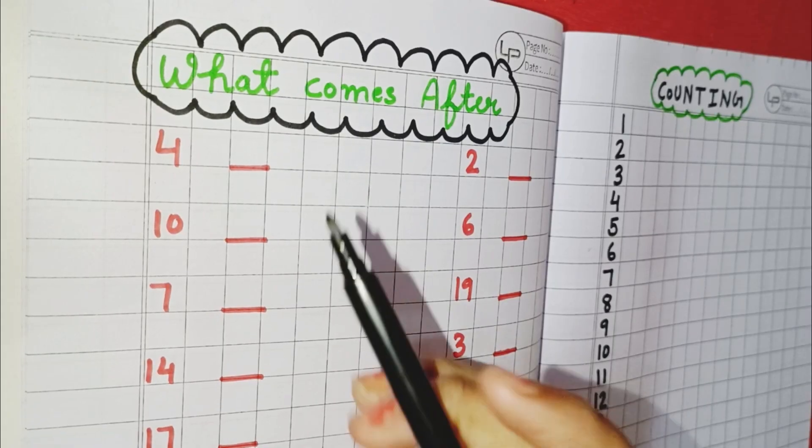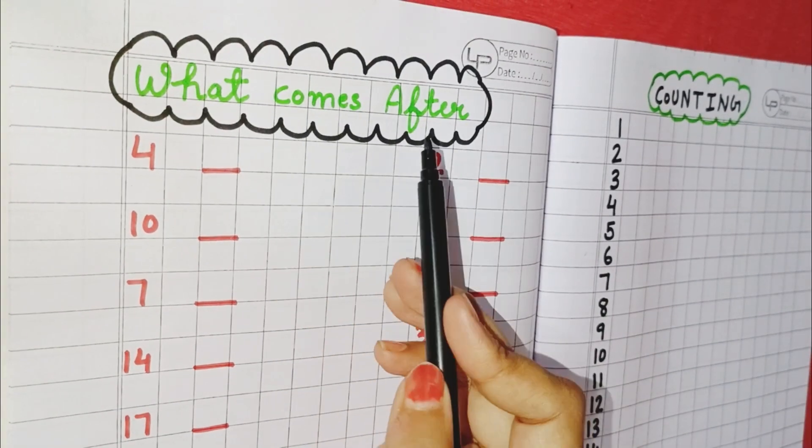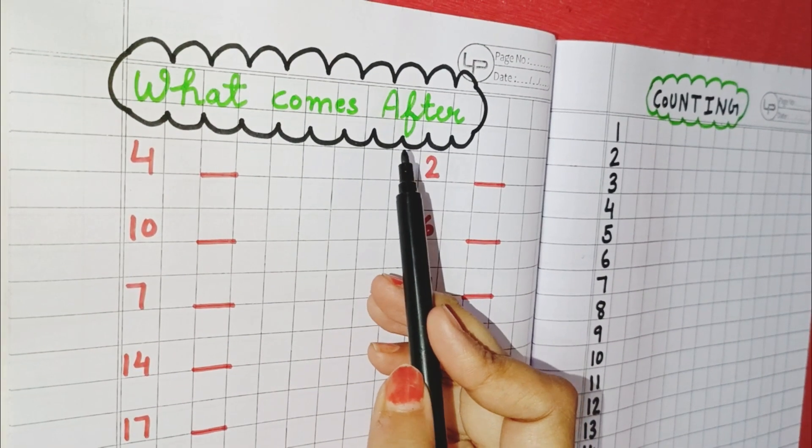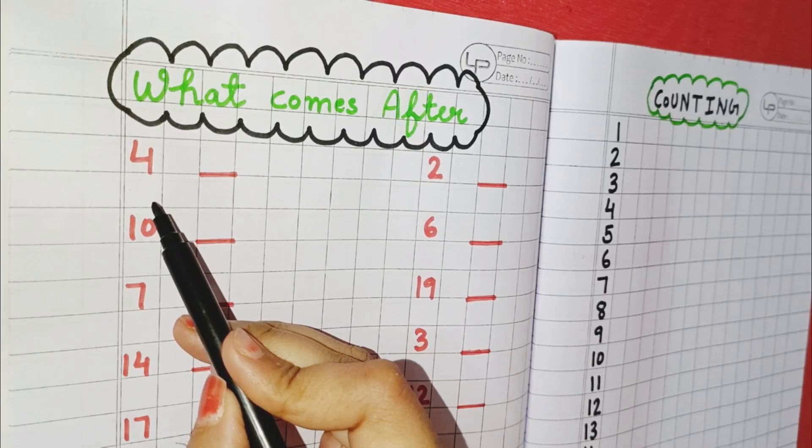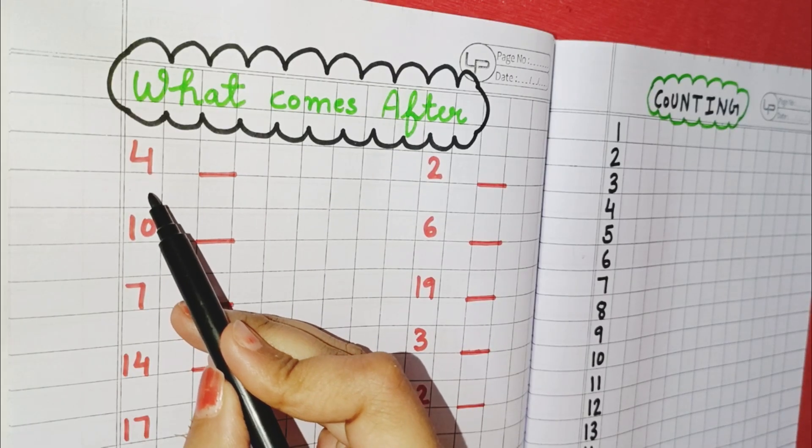Now, we will study what comes after. Children, the first number here you can see is 4.